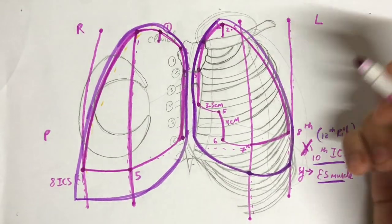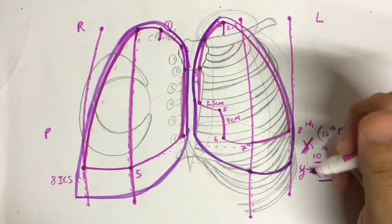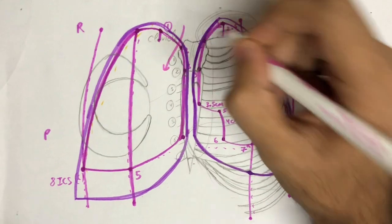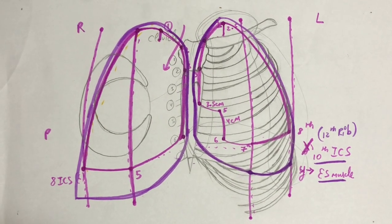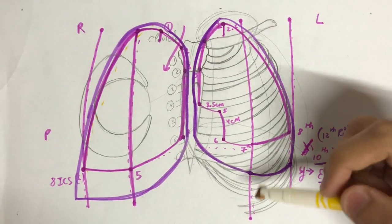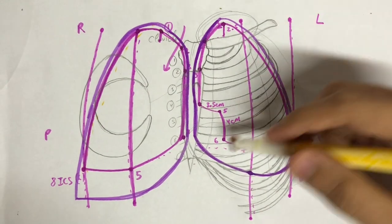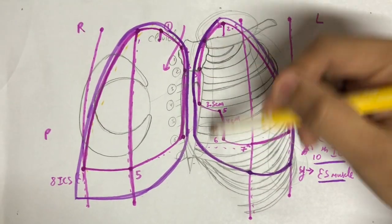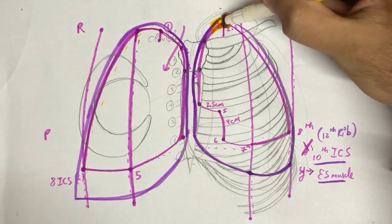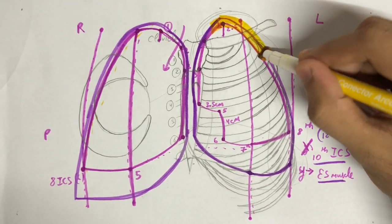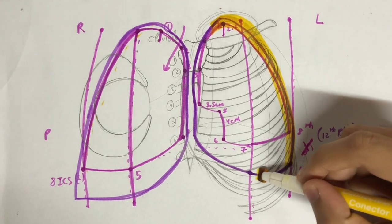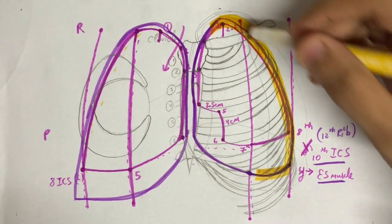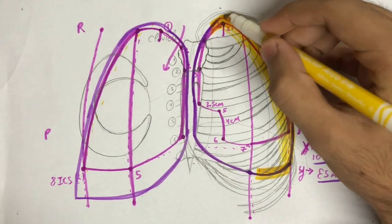Sympathetic supply to the visceral pleura ranges from T2 to T5, whereas parasympathetic supply is majorly from the vagus nerve. The parietal pleura develops from the somatopleuric mesoderm, and hence it has somatic nerve supply. The parietal pleura is divided into four segments: cervical, costal, diaphragmatic, and mediastinal. The cervical pleura, the entire costal pleura, and the lateral aspect of the diaphragmatic pleura are supplied by the intercostal nerves.